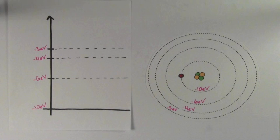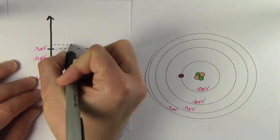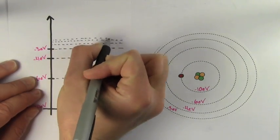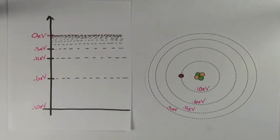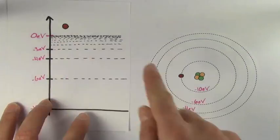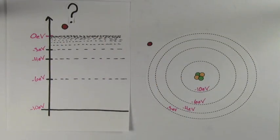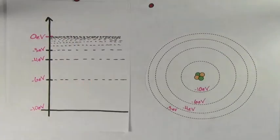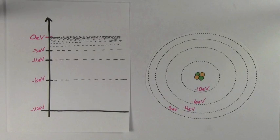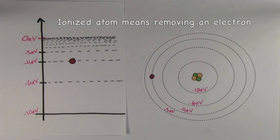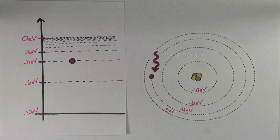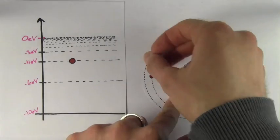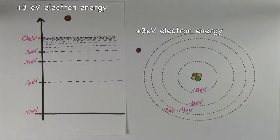Something else that's unrealistic about our hypothetical atom is that real atoms wouldn't stop at negative 3 eV for the highest energy level. Real atoms have energy levels that get closer and closer together as you approach 0 eV. When an electron gets more than 0 eV of energy, it has positive energy and is no longer bound to the atom — it's free to leave, and we say the atom has been ionized. For example, if the electron started at the negative 4 eV energy level and absorbed a 7 eV photon, it would have a total energy of positive 3 eV and would leave the atom.